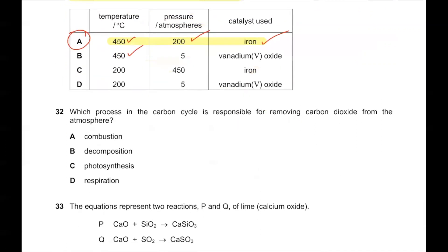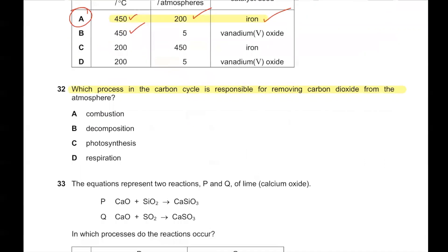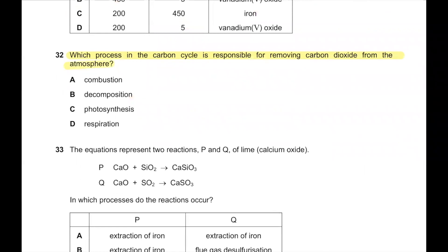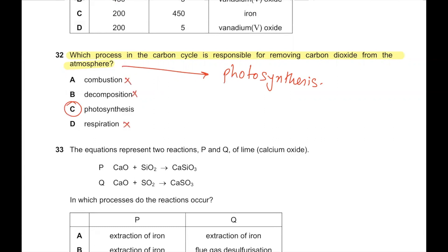Question number 32. Which process in the carbon cycle is responsible for removing carbon dioxide from the atmosphere? Removing carbon dioxide is done by trees through photosynthesis. In photosynthesis, carbon dioxide reacts with water to produce glucose and oxygen. Photosynthesis is the correct answer. Combustion, decomposition, and respiration all add carbon dioxide to the atmosphere.